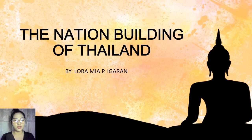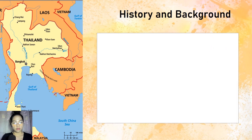My name is Laura Mia Pi Igaran and today I will be discussing the nation building of Thailand. The Kingdom of Thailand is one of the few developing countries never to have been colonized. It is located centrally in Southeast Asia with both extensive Pacific coasts — the Gulf of Thailand — and Indian Ocean access.